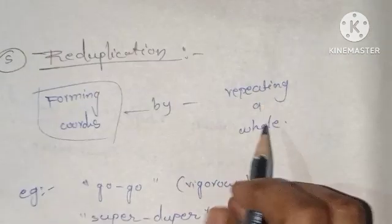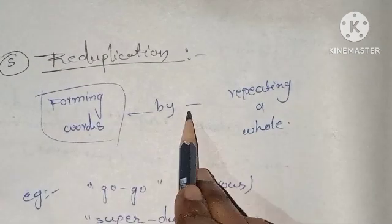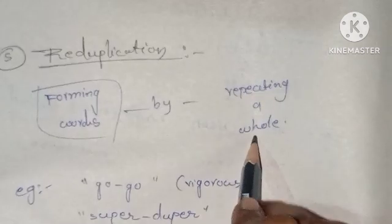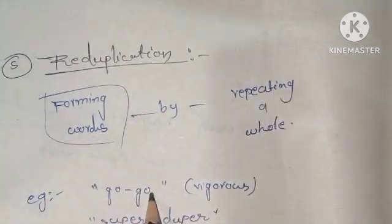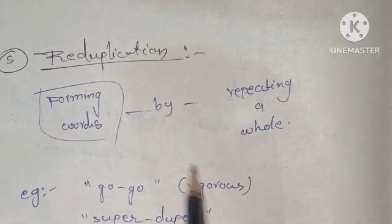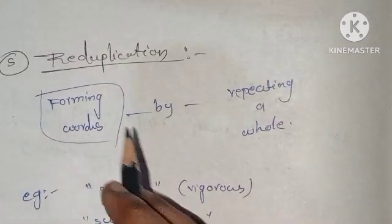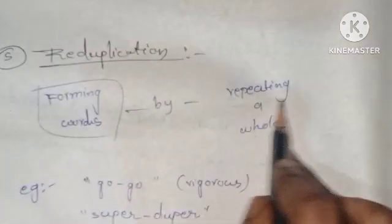Reduplication is the forming of words by repeating a whole. Examples include 'go-go' and 'super-duper'. It's repeating the whole word.